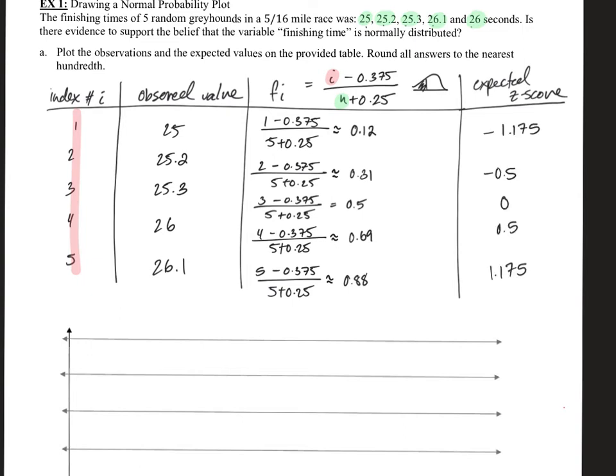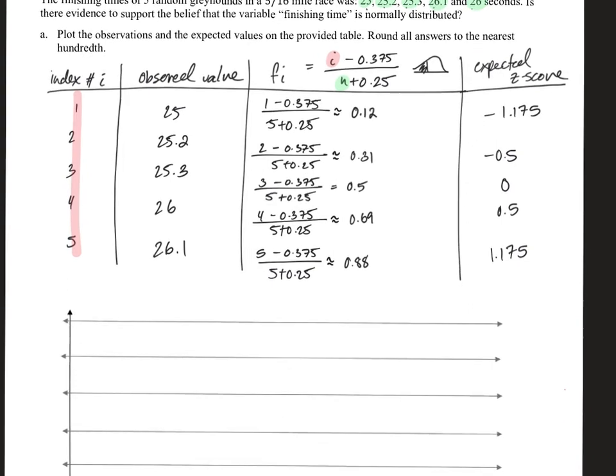Once you find the closest number in Table 5, use the corresponding row and column to get your expected z-score. One thing to note: you may find two values equidistant from your F sub i value. In that case, take the two corresponding z-scores, add them, and divide by two to find the mean. Notice the z-scores form a mirror image — negatives and positives that are symmetric.